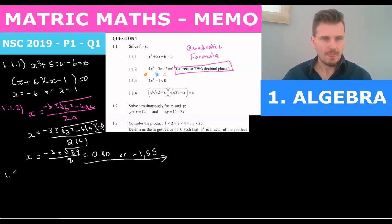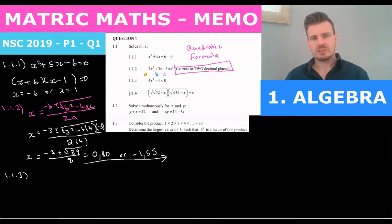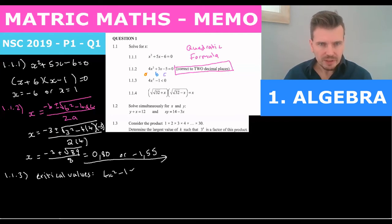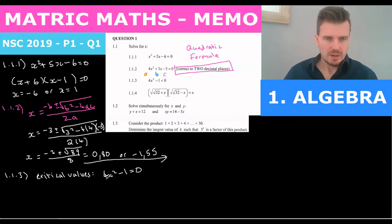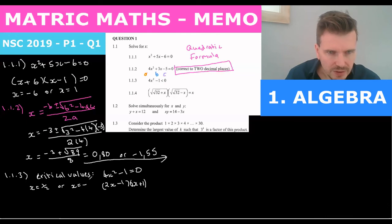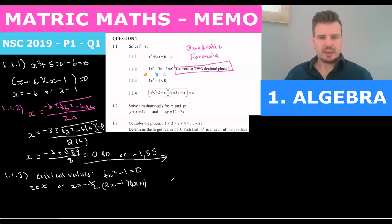1.1.3 is an inequality. What we do here is treat it like an equation. So I'm going to find the critical values first: I put 4x squared minus 1 equal to zero, because I'm just finding the critical values. That factorizes to 2x minus 1 times 2x plus 1, giving critical values of x equals a half or x equals negative a half.